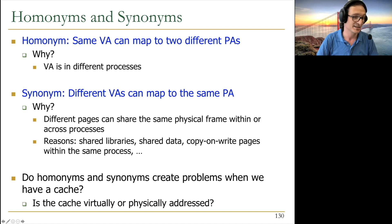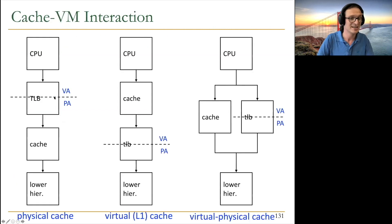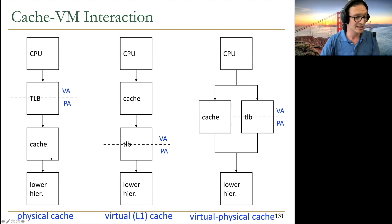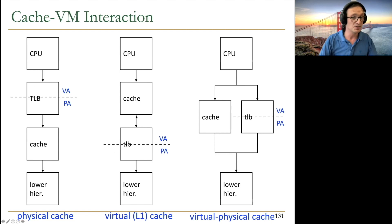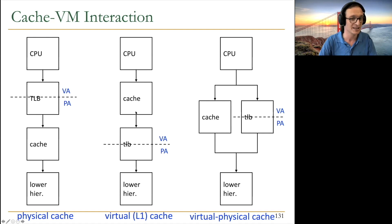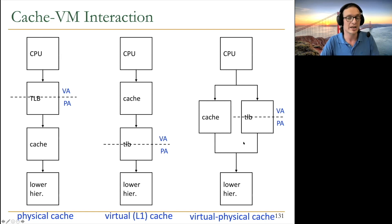Whether the cache is virtually or physically addressed is critical here. There are three approaches: a physically addressed cache (after translation) avoids homonym/synonym problems but adds huge latency — you go through the TLB before cache access. A completely virtual cache has too many homonym and synonym problems. The usual compromise is a virtually indexed physically tagged (VIPT) cache — accessing the cache concurrently with the TLB, then doing the tag check using the physical address.